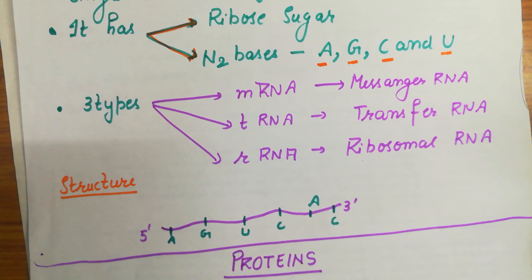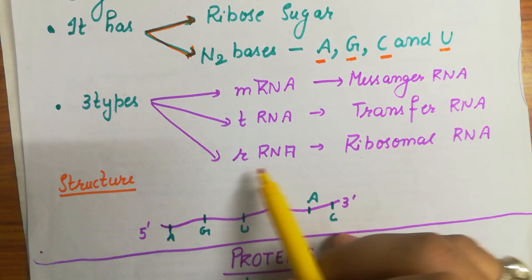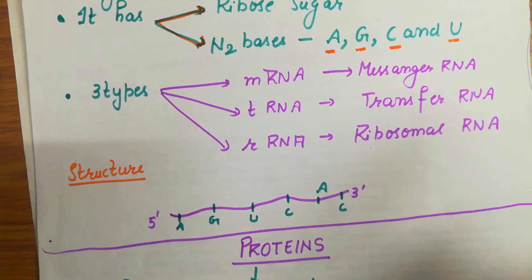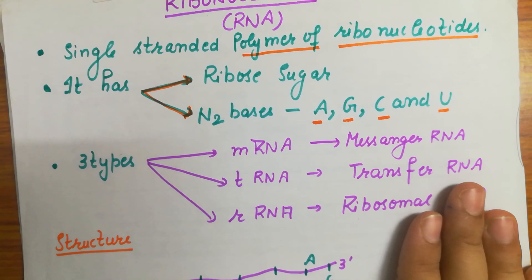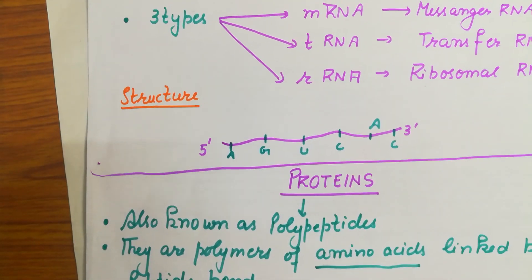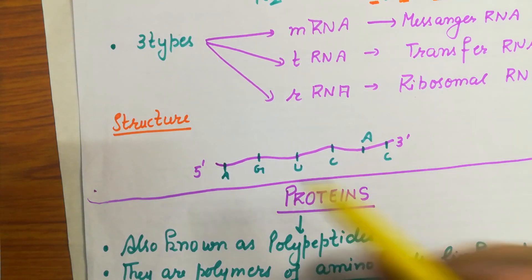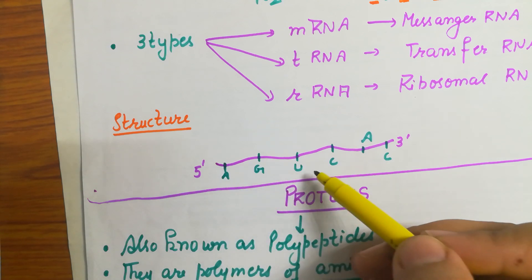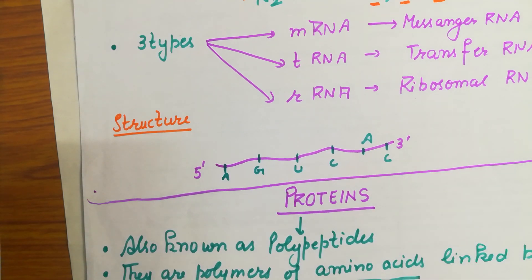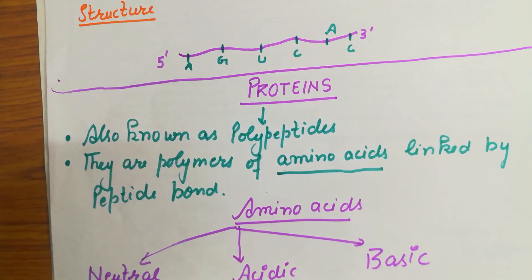RNA is of three types: mRNA, tRNA, and rRNA. 'M' is for messenger - it carries information. 'T' is transfer - that information is transferred by this RNA. 'R' is ribosomal - which has the ribosome and helps in protein synthesis. If RNA is not there, there will be no protein synthesis. RNA is single-stranded with nitrogen bases A, G, U, C in the 5' to 3' direction.